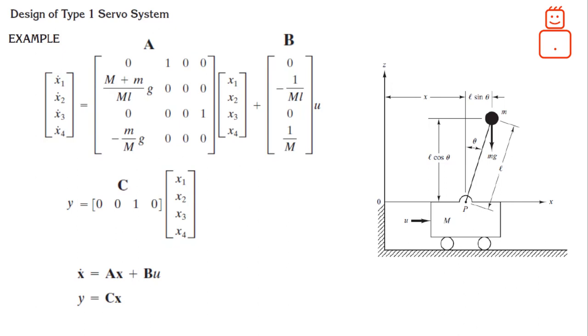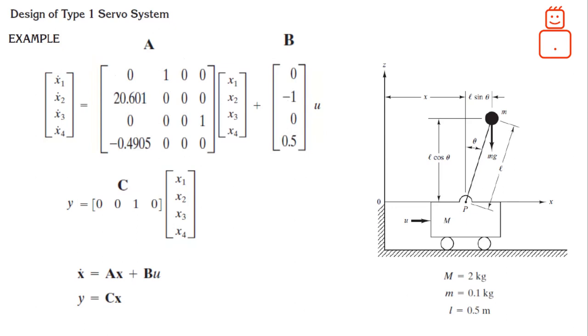Let us also assume that the numerical values for cart mass capital M, the pendulum mass M, and the pendulum length L are as shown. Then, when these numerical values are substituted in the state space matrices, we will have the following numerical format of both the state and the input matrices.